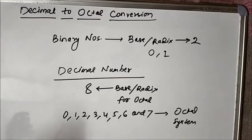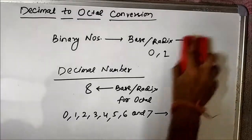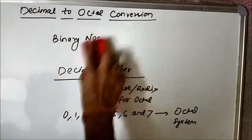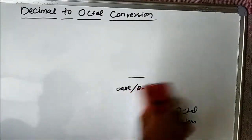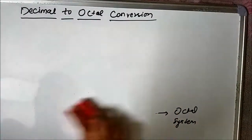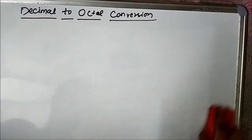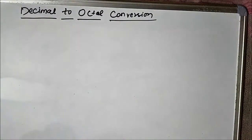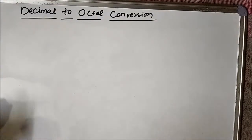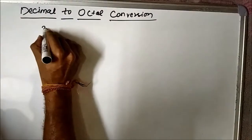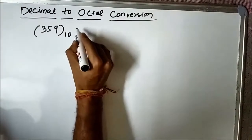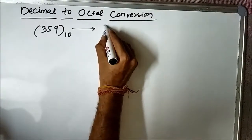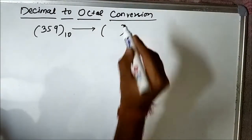Let us see how we do that with the help of an example. We will use the repeated division by 8 technique. Let us take the number 359, which is in decimal form, and convert it into its base 8 or octal form.